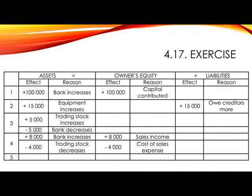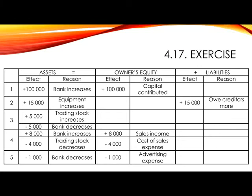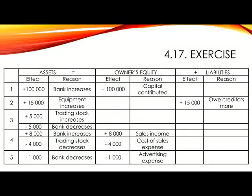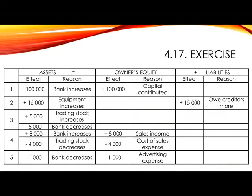Number 5. Paid for advertising, 1,000 Rand. Since we are told that the amount was paid, bank must be involved, and the other account is advertising, an expense that will decrease equity. In assets, we show minus 1,000 as bank decreases, and in equity, minus 1,000 for advertising expense.